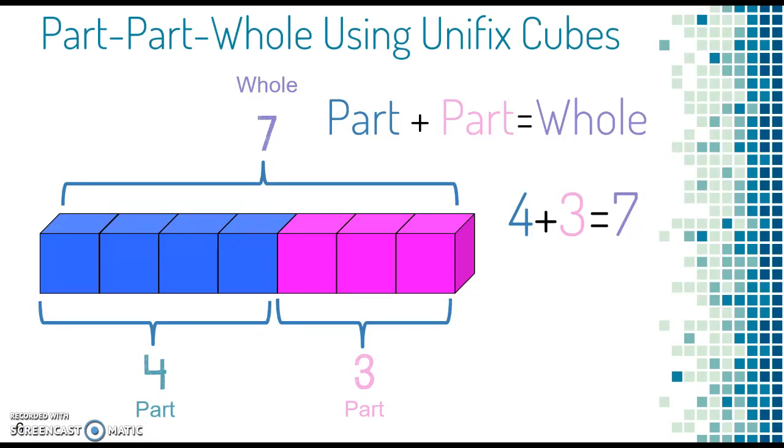So if we were to write this in an equation, it would be 4 plus 3 equals 7. The addends are the part and the sum is the whole.